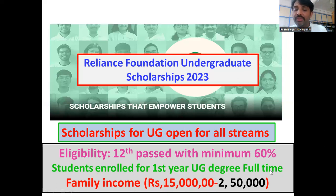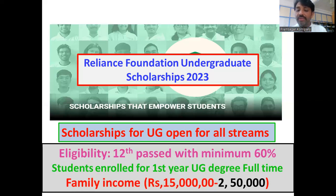The enrollment must be for a full-time undergraduate program. Family income should be between 2.5 lakhs to 15 lakhs. Preference will be given to lower income family applicants — that means whoever has an income of 2.5 lakhs will get priority.